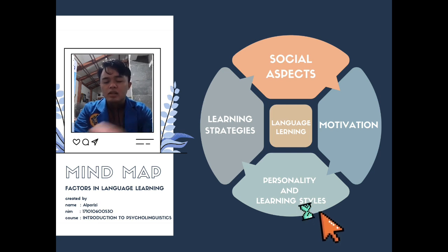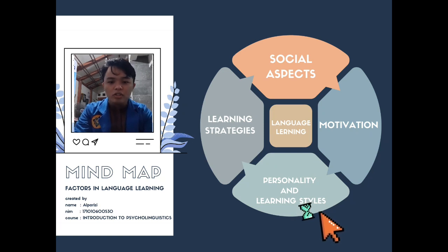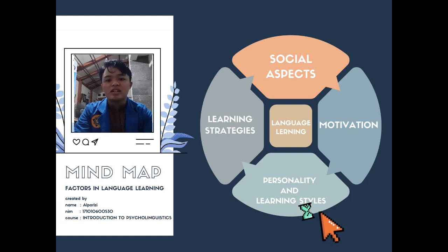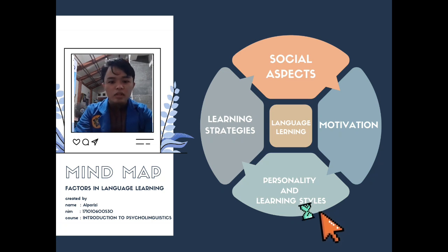The third factor is personality and learning styles. Personality and learning style are among the psycholinguistic factors that affect the foreign language learning process directly or indirectly. Personality is the particular combination of emotional attitudes, behaviors, and response patterns of an individual. Learning style is generally defined as an individual's natural or habitual pattern of acquiring and processing information in a learning situation.